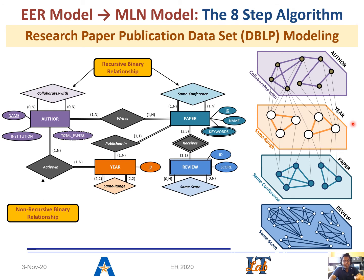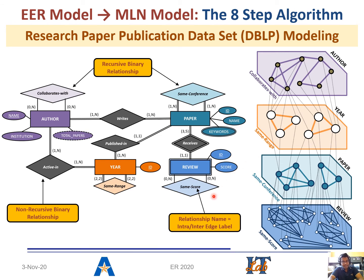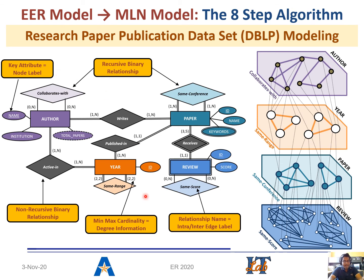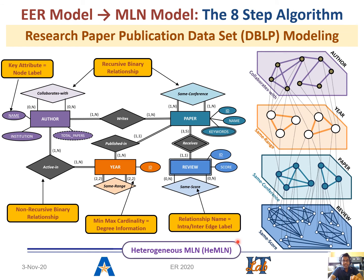We continue building the remaining interlayer edges. The relationship name corresponds to the intra- or interlayer edge label, and the key attribute corresponds to the node label. All remaining attributes of the entities and relationships are stored separately as part of a relation, which are used for the drill-down process. The cardinality ratios help us calculate the degree information of the generated MLNs. Clearly, the set of nodes in each layer is different, thus generating a heterogeneous multi-layer network.